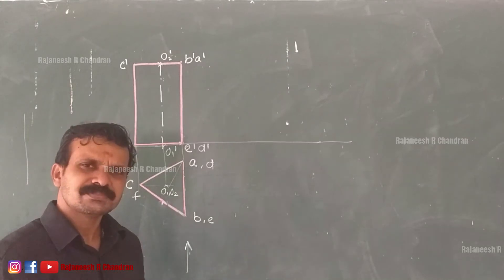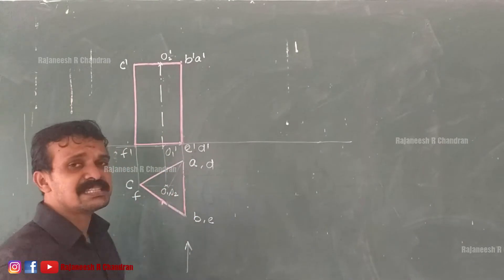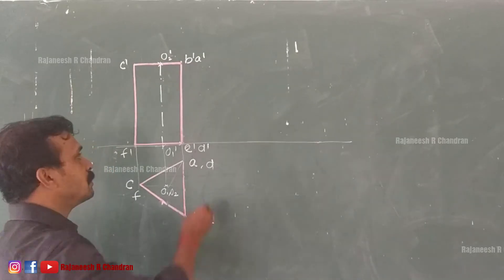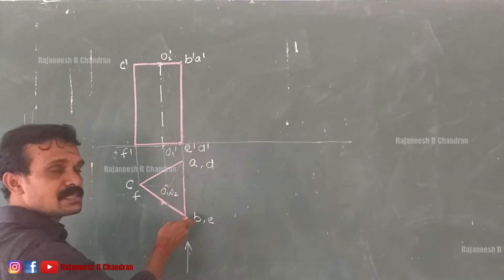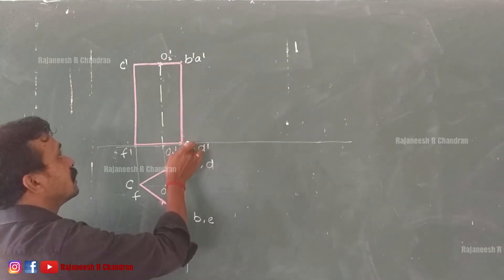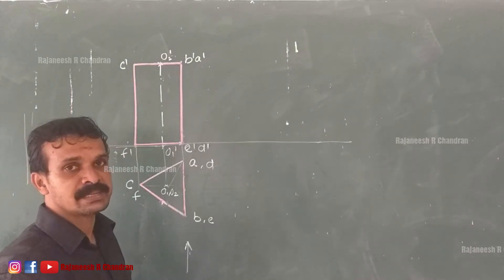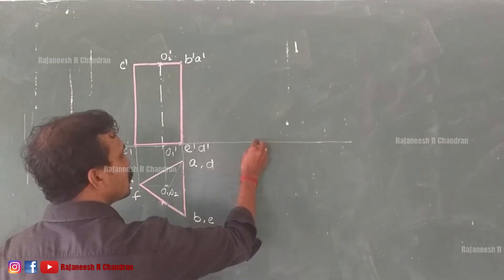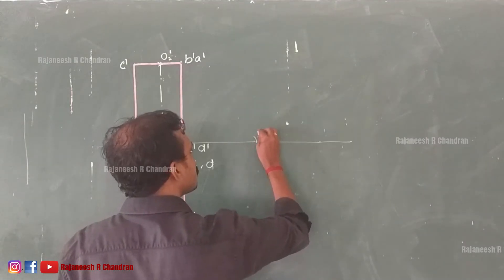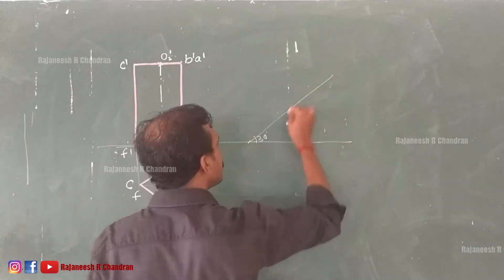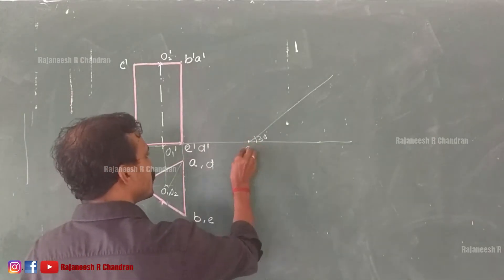Now it is evident that the face containing the resting base edge — that is E dash, B dash, A dash, D dash, E dash — is inclined at an angle of 30 degrees. So what we can do is draw a line at that inclination of 30 degrees, and we can mark this E dash D dash.